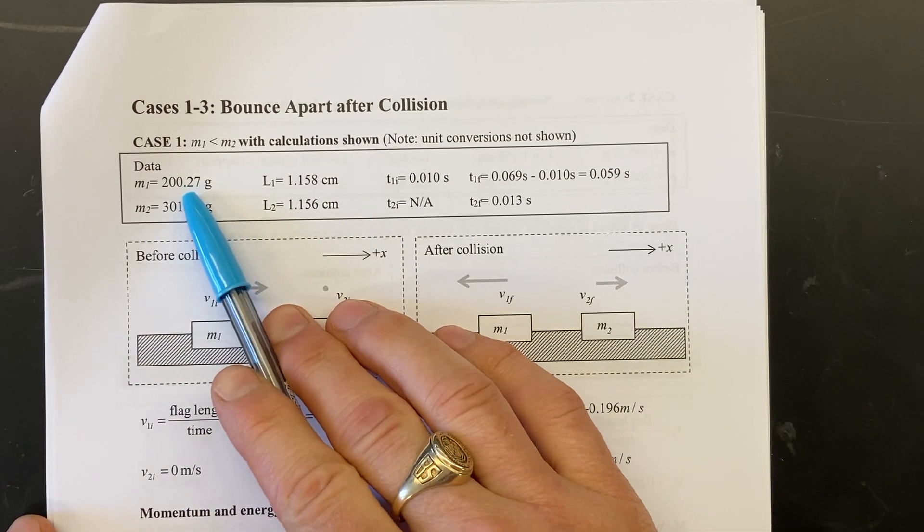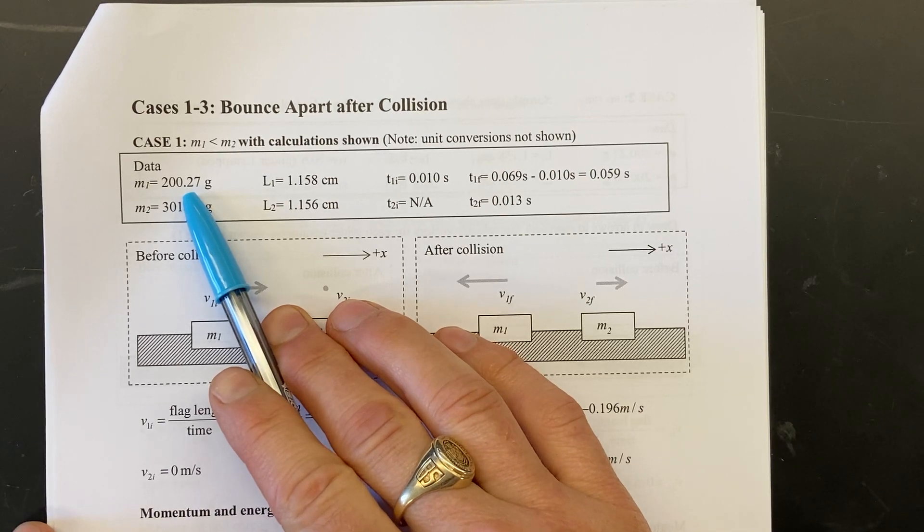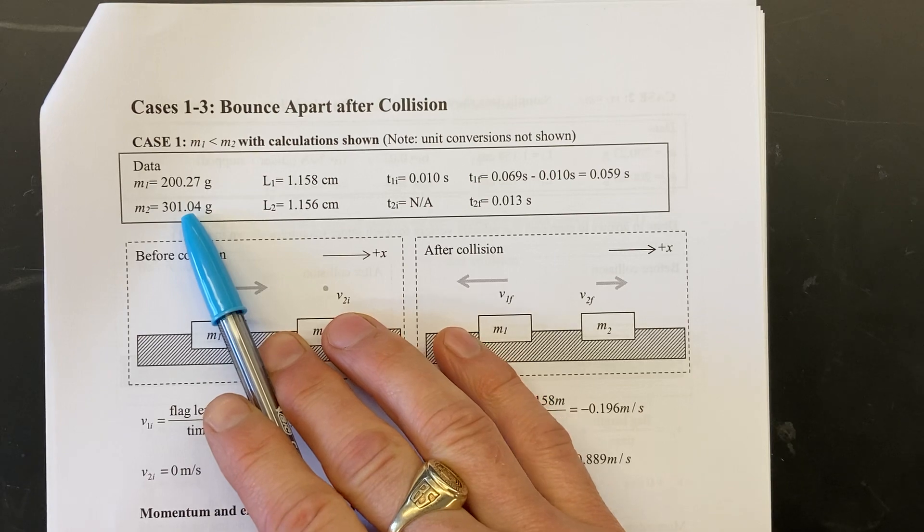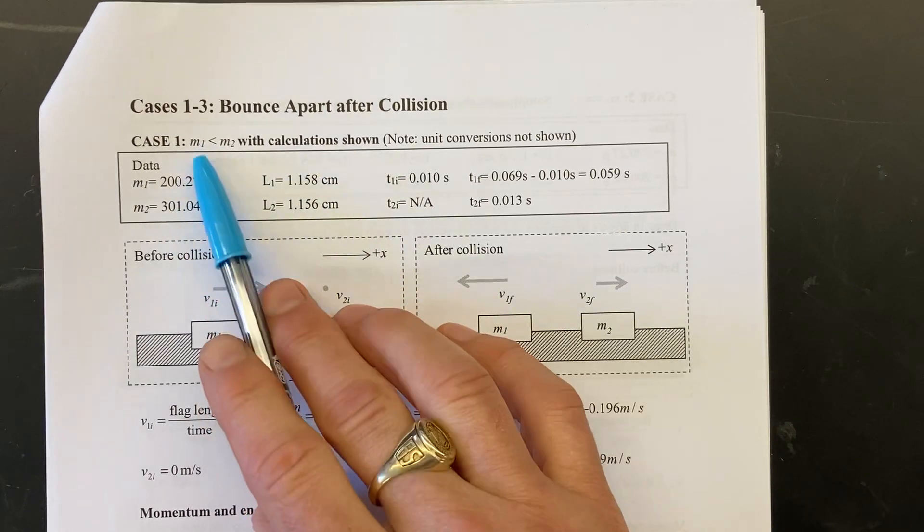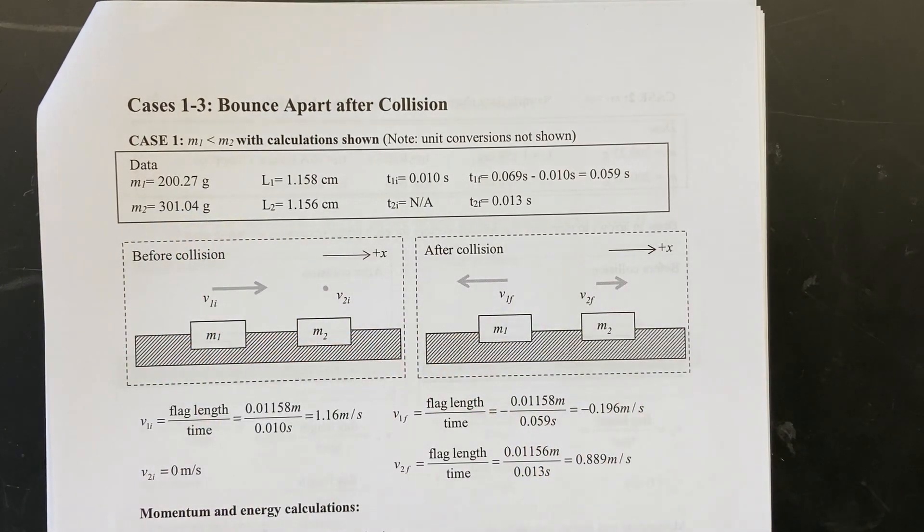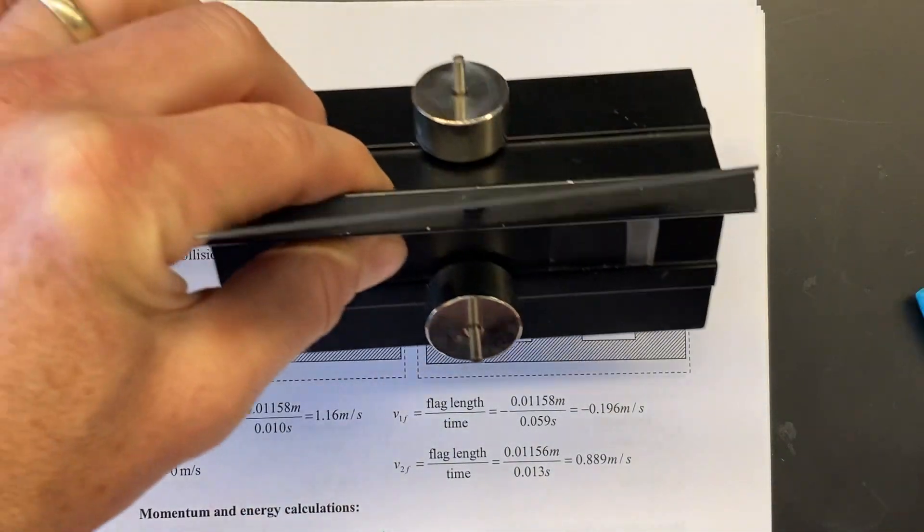So I can take each glider and put them on the balance, and the gliders are, in this case, intended to be much different, m1 less than m2.